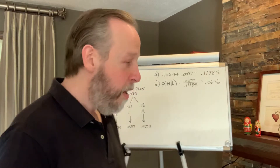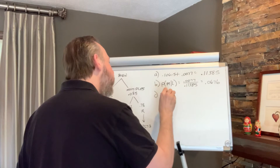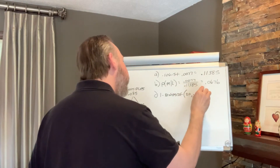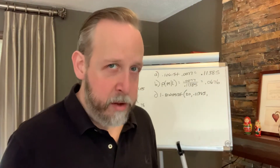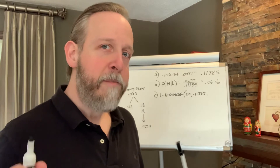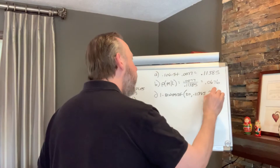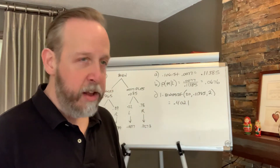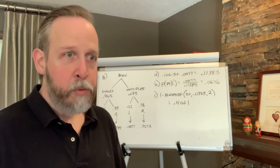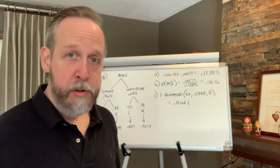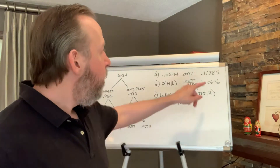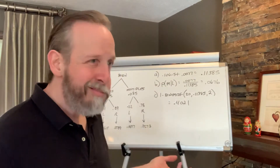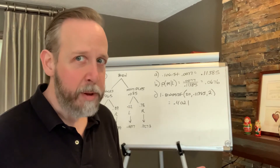One minus binomial CDF, where n is 20, p is 0.11385, and for the complement rule, x is our biggest failing value. What number is the biggest number that fails to be at least three? Two. That gives the answer 0.4021. There is a 40.21% chance of finding at least three lefties in our field of 20 people. This makes sense: 11.385% of 20 people means we expect to find more than two, so there's a higher probability of finding at least three.